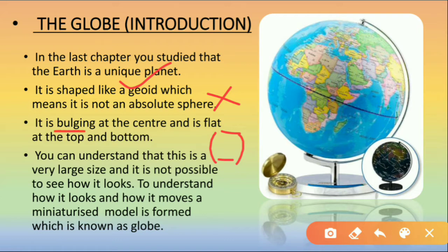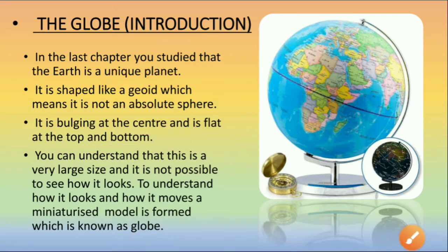Bulging means it is a little bit swelled up. The center part is fuller, and at the top and the bottom it is flat. That shape is known as geoid. That is why we say that the earth is geoid in shape and not a sphere.